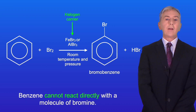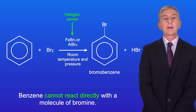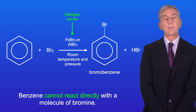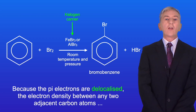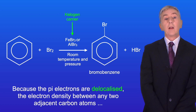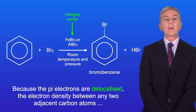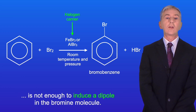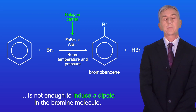Benzene cannot react directly with a molecule of bromine. Because the pi electrons are delocalized, the electron density between any two adjacent carbon atoms is not enough to induce a dipole in the bromine molecule.